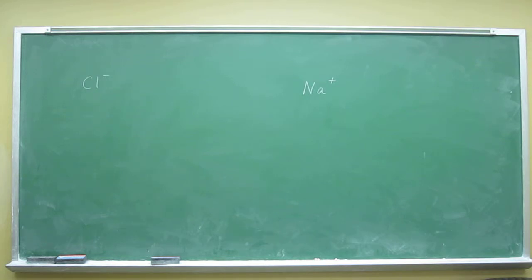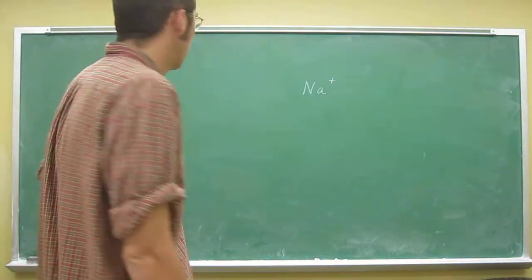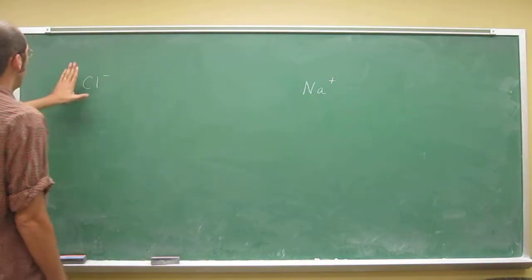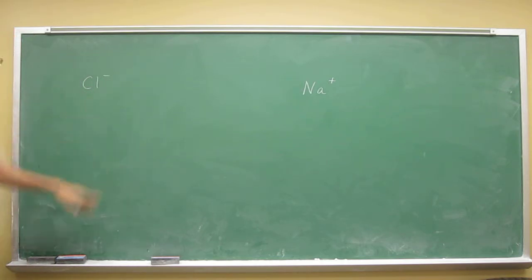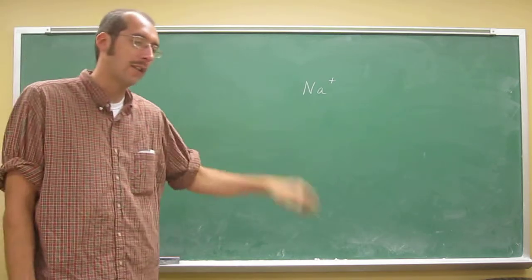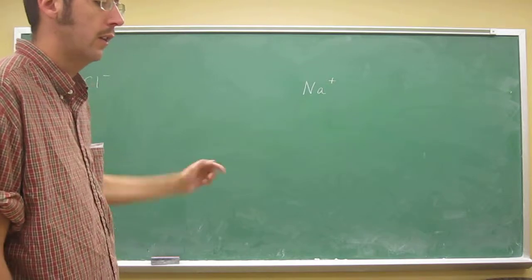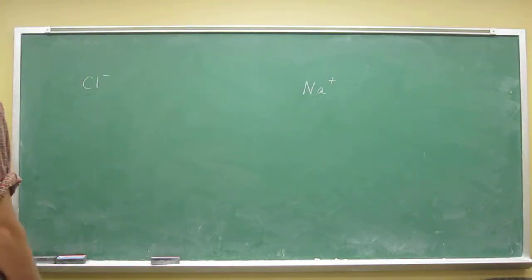So again, all you've got to do is do the electron configuration and all of that stuff, but all you've got to do is know that when you add one electron to chlorine, it gains an electron, of course, and attains the argon configuration.